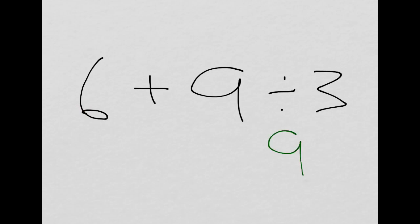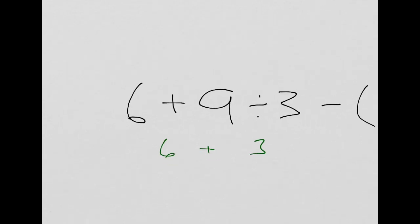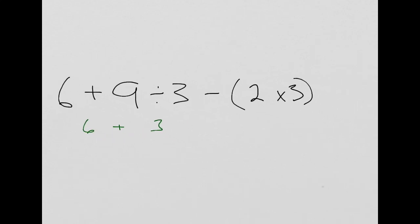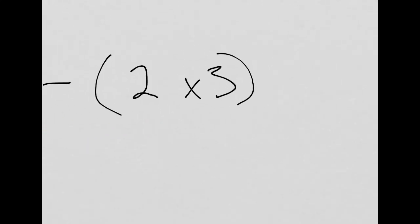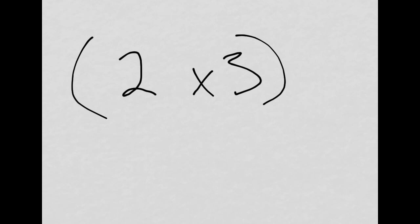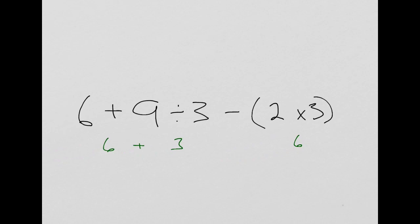So, this becomes 9 divided by 3 is 3. And then it's 6 plus 3, like that. Now, before we even do that, though, we should have actually gone over and taken a look at the parentheses. It doesn't affect it in this case. But, good habit, always start with parentheses. 2 times 3 is 6. So, now we have 6 plus 3 minus 6.